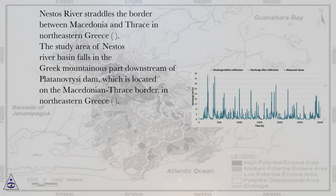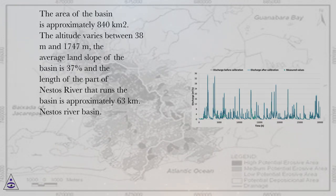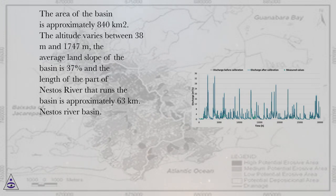Nestos River straddles the border between Macedonia and Thrace in northeastern Greece. The study area of Nestos River Basin falls in the Greek mountainous part downstream of Plutonavrissi Dam, which is located on the Macedonian-Thrace border in northeastern Greece. The area of the basin is approximately 840 square kilometers. The altitude varies between 38 meters and 1,747 meters, the average land slope of the basin is 37%, and the length of the part of Nestos River that runs the basin is approximately 63 kilometers.